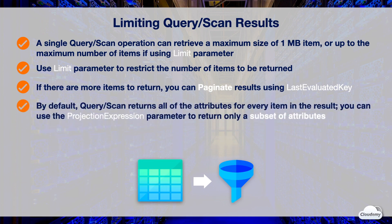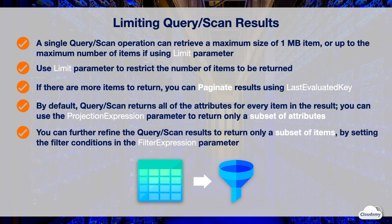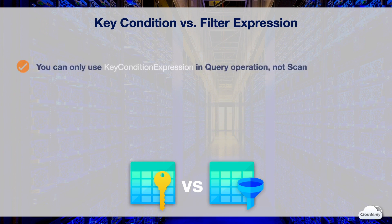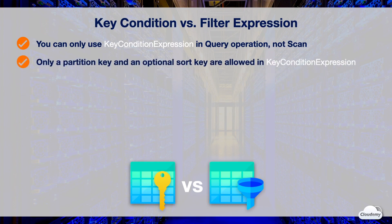By default, a query or scan operation returns all of the attributes for every item in the result. You can use the projection expression parameter to return only a subset of the attributes. You can further refine the query or scan results to return only a subset of items by setting the filter conditions in the filter expression parameter.